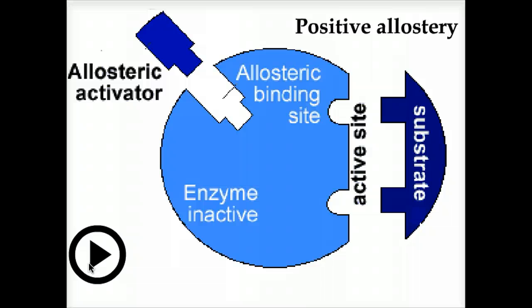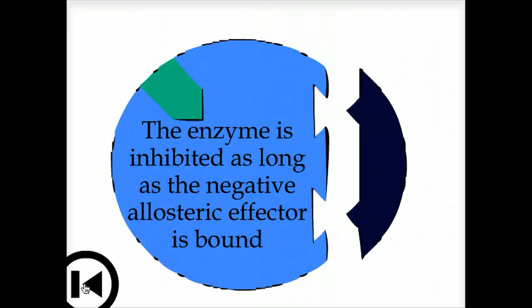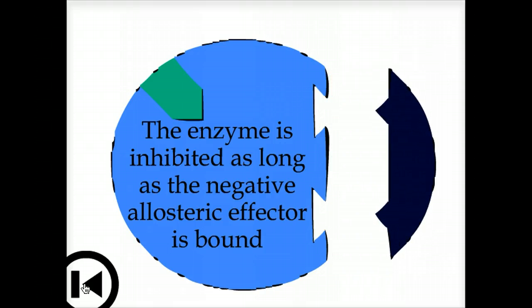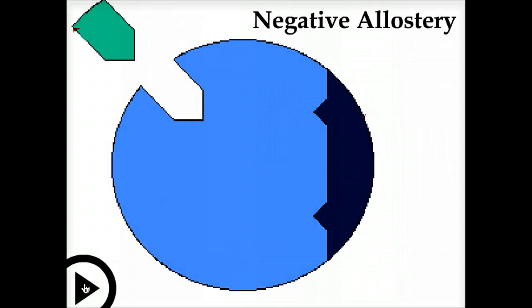The binding of the effector is reversible — it can go on and off. As you can well imagine, if there are positive regulators, there are also likely to be negative regulators. In this case, the enzyme is active in the absence of the regulator, but when the regulator binds to the enzyme, it turns the enzyme off by changing the structure, changing the ability of the enzyme to bind the substrate. When the negative regulator comes off the enzyme, the enzyme again is active.